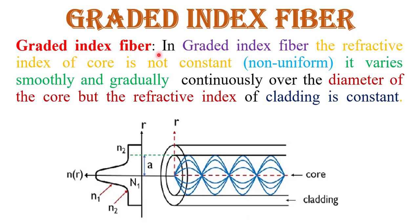In a graded index fiber, the refractive index of the core is not constant — it is non-uniform. It varies smoothly and continuously over the diameter of the core. However, the refractive index of the cladding is constant and smaller than the refractive index of the core.